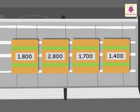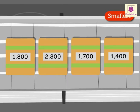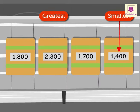Let us arrange the numbers one thousand eight hundred, two thousand eight hundred, one thousand seven hundred, and one thousand four hundred in the ascending and descending order. The smallest number is one thousand four hundred and the greatest number is two thousand eight hundred.